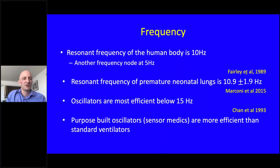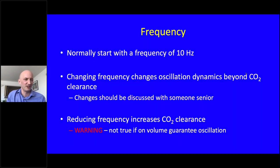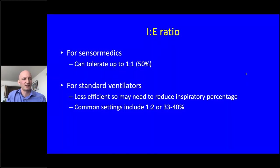Over-expanding the lungs affects the heart and may cause blood pressure to fall — you may need to reduce MAP to improve cardiac function, or use inotropes if more airway pressure is required. The next thing to consider is frequency. The resonant frequency of the human body is 10 Hz, as is the resonant frequency of premature neonatal lungs. Mechanical efficiency tends to drop off below 15 Hz, so whilst some studies suggest RDS lungs have an even higher resonant frequency, our ventilators may not deliver that effectively. Not all oscillators are equal — a purpose-built oscillator like the Sensor Medics can apply higher frequencies more efficiently. Most people start at 10 Hz.